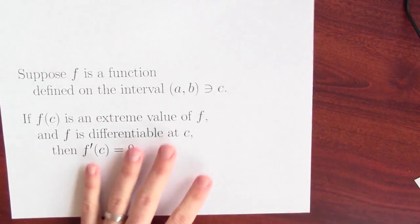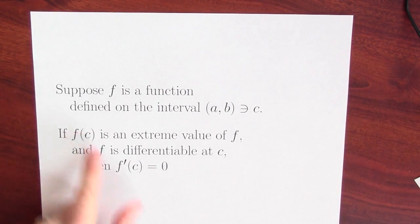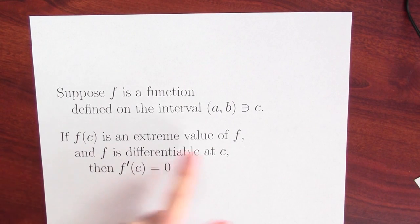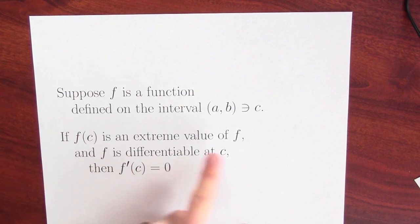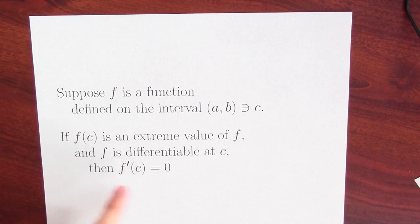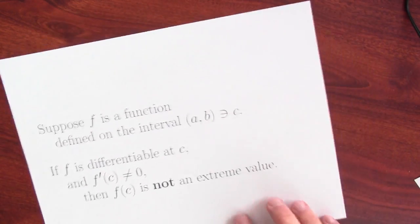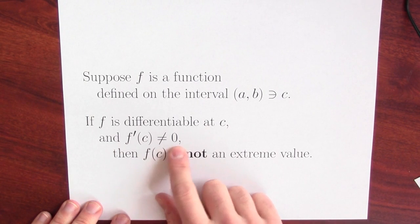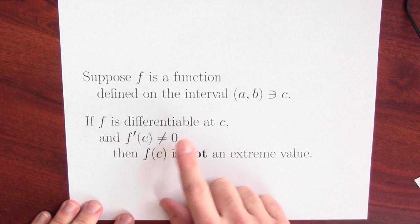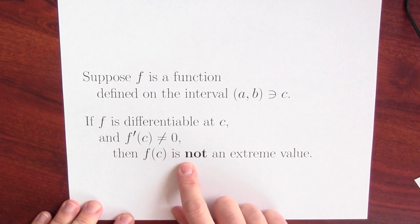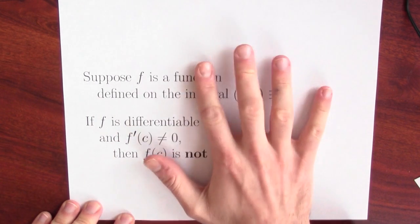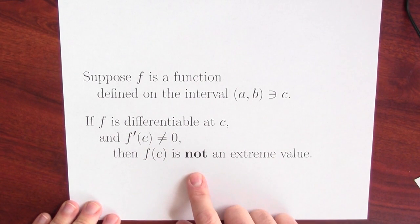It's worth thinking a little bit about the relationship between the original statement, where I'm starting off with the claim that f of c is an extreme value and then concluding that the derivative vanishes. And here, I'm beginning by assuming the derivative doesn't vanish and then concluding that f of c is not an extreme value. This is the thing that I want to try to prove now.